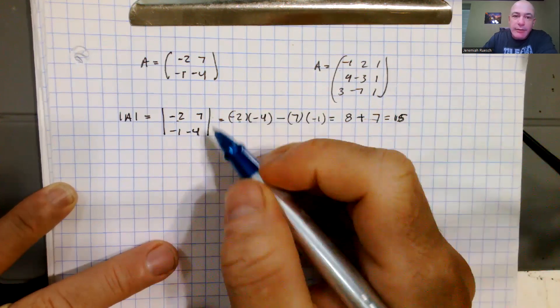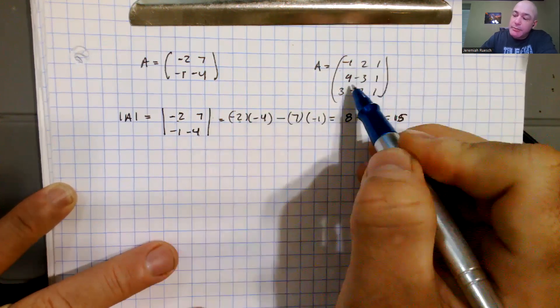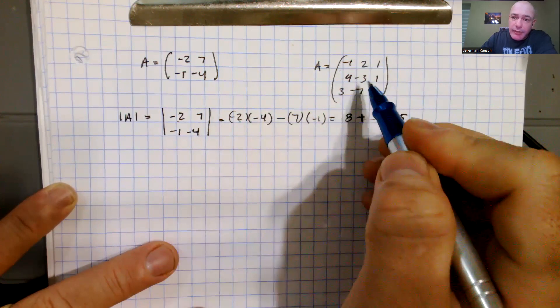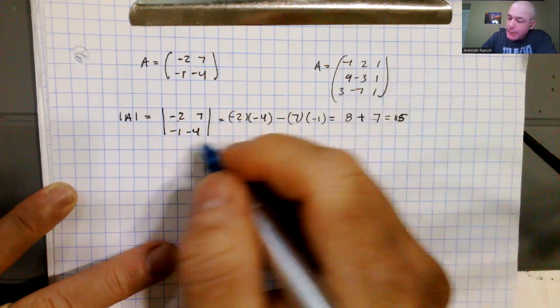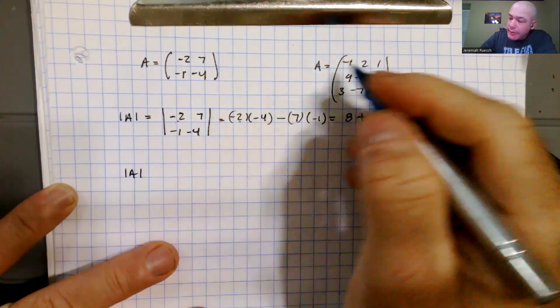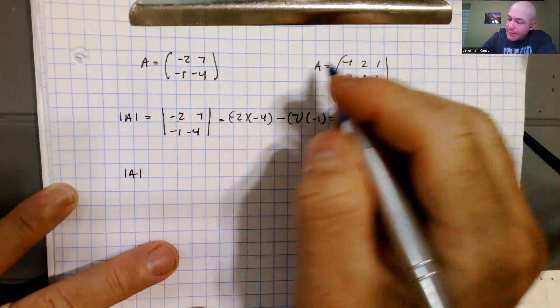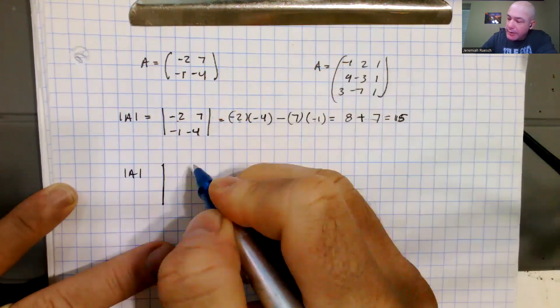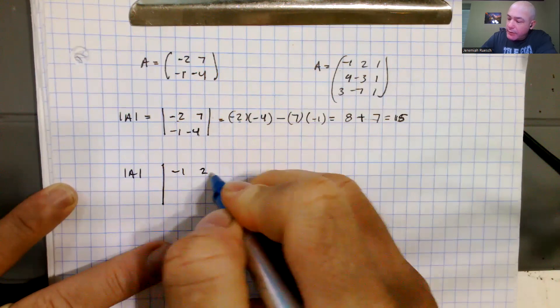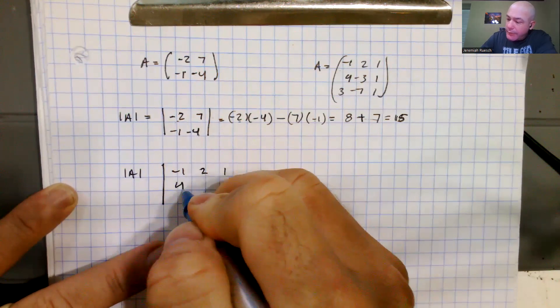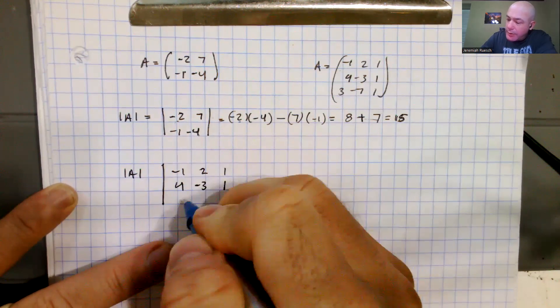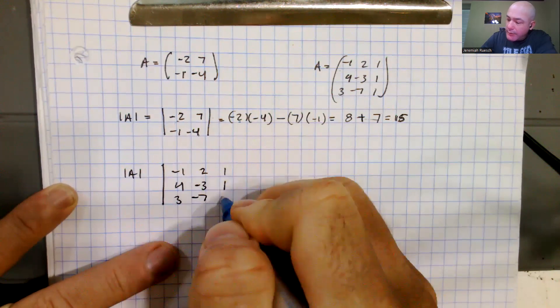Okay, so that's the determinant of that 2 by 2, and now let's compute the determinant of this 3 by 3. So this is, I should probably label these different matrices, but I think it's clear in the context, negative 1, 2, 1, 4, negative 1, 1, and 3, negative 7, 1.